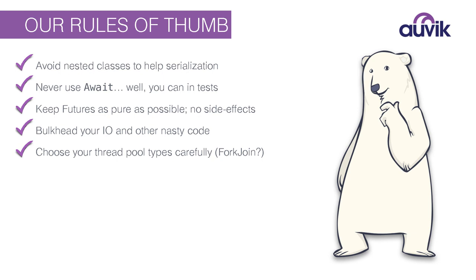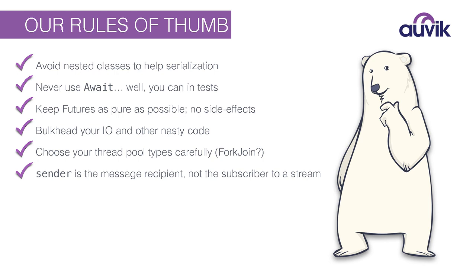Choose your thread pools carefully. Don't use the fork join thread pool for database work — it's expensive to have a large fork join pool, and in fact not cheap to have a small one either. As the number of cores increases, it gets more expensive. The sender of the message is the recipient, not the subscriber to a stream. Once you've used sender for a response, throw it away. If you want to remember anything, lift it into your protocol. These are the subtle bugs where everything works fine, the compiler likes it, but you start losing messages here and there — that's tough to debug.